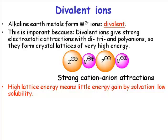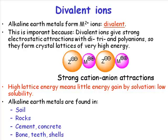You also have very low solubility for these species, because in order to dissolve something you have to break up the ionic lattice. It's very difficult to break up these ionic lattices because the Coulombic interactions are so strong. So alkaline earth salts, unlike alkali metal salts — and this is a very important distinction — are really quite poorly soluble.